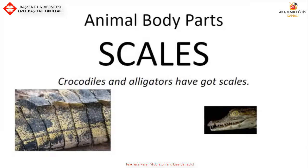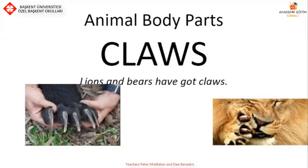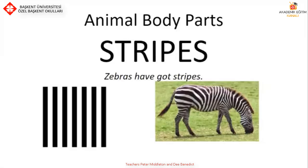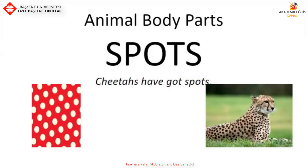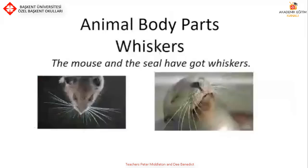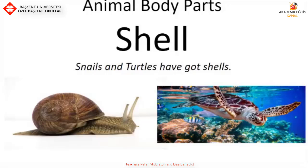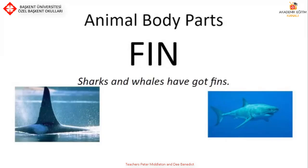Let's talk about animal body parts. These are scales — a crocodile and an alligator have got scales. Lions and bears have claws. The tiger has got fur. Look at the picture on the left — what animal has this fur? A zebra has got stripes and a cheetah has got spots. The mouse and the seal have got whiskers. Owls and dragonflies have got wings. Snails and turtles have got shells. Sharks and whales have got fins.